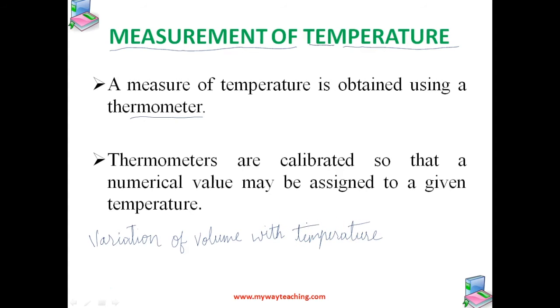For example, a common thermometer, the liquid in glass type with which you are familiar. Mercury and alcohol are the liquids which are used in most of these liquid in glass thermometers. Usually mercury and alcohol is used in the thermometer.